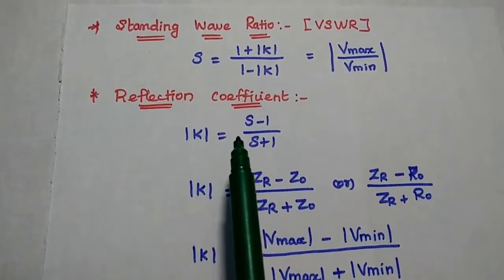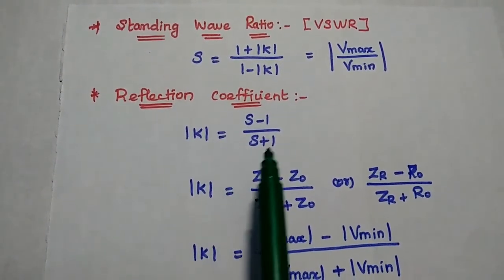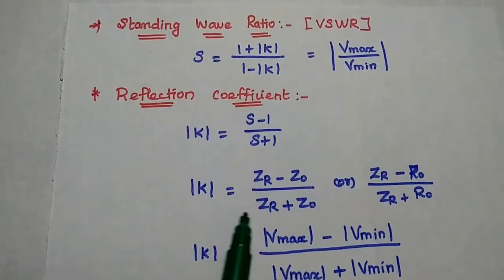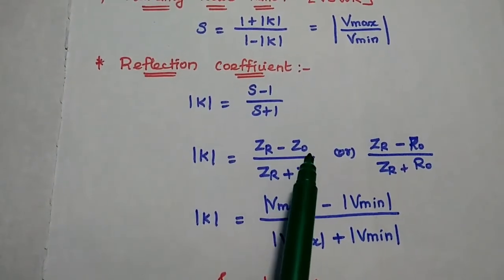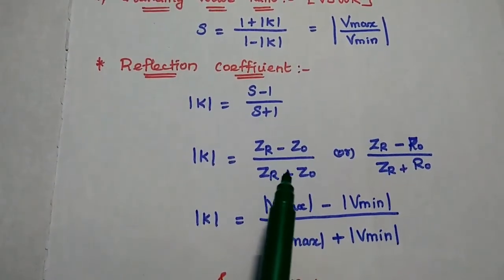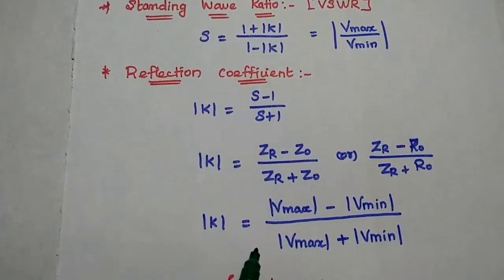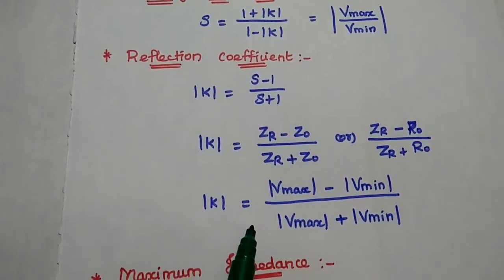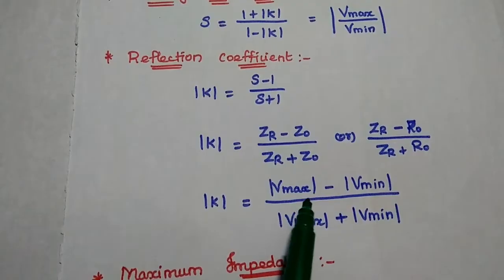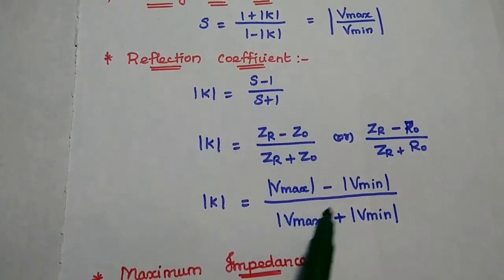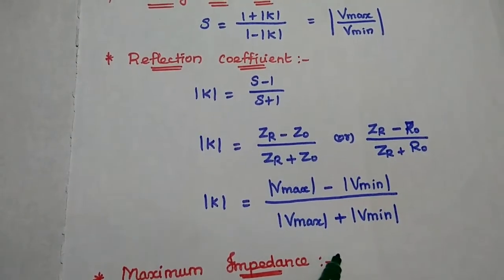K is equal to S minus 1 divided by S plus 1. Another formula is K equal to ZR minus Z0 divided by ZR plus Z0. K can also be defined using the formula Vmax minus Vmin divided by Vmax plus Vmin.